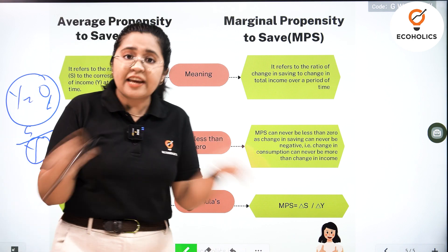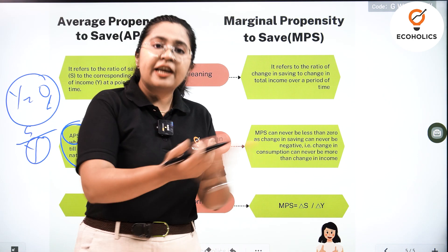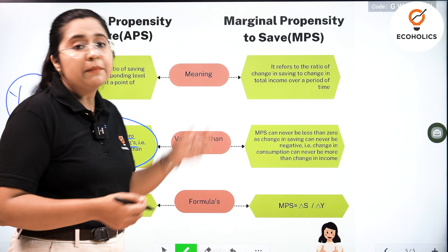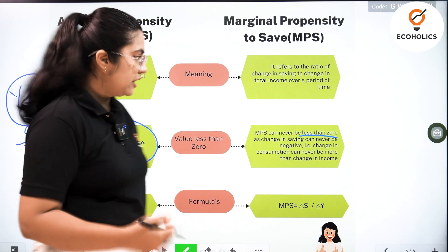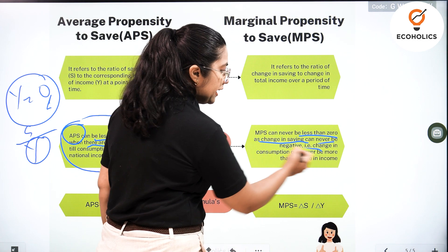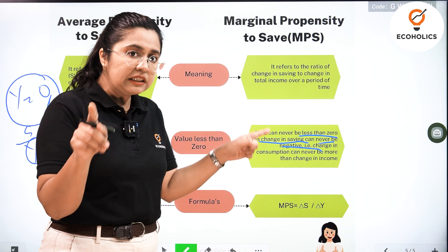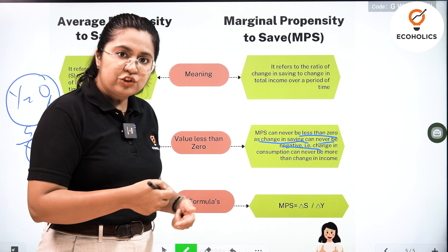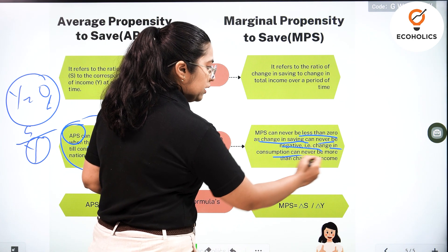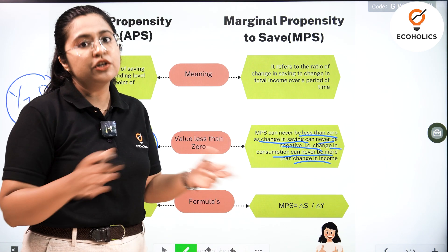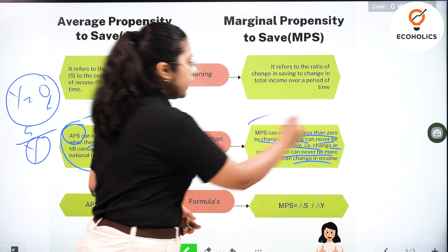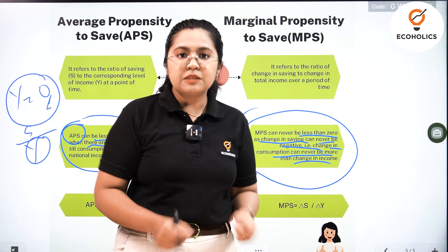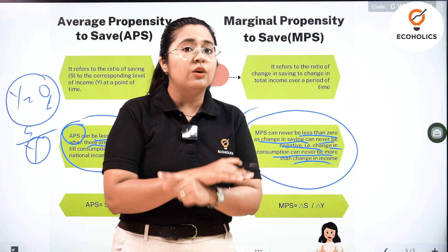Things change when we consider MPS. MPS is the fraction of change, and any change cannot be zero or negative. The change in savings can never be negative — there will always be a certain difference between two amounts and that amount cannot be considered a negative feature. Which is why MPS is non-zero and cannot be less than zero. This is a major difference: apart from their definitions, APS and MPS differ in that APS can be less than zero, but MPS cannot be less than zero.